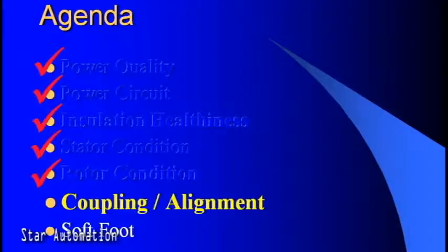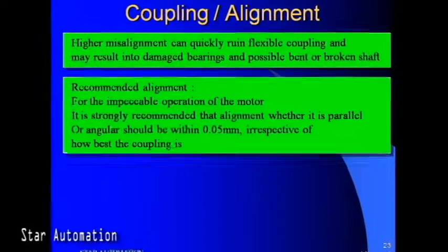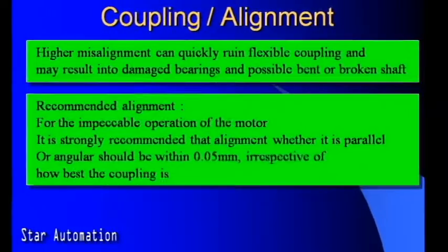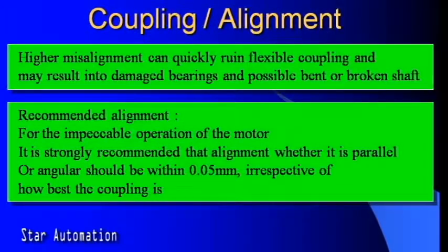Next we will discuss coupling and alignment, which may contribute to motor problems. Higher misalignment can quickly ruin flexible couplings and may result in damaged bearings and possible bent or broken shafts. For impeccable motor operation, it is strongly recommended that alignment — whether parallel or angular — should be within 0.05 millimeters, irrespective of how good the coupling is.